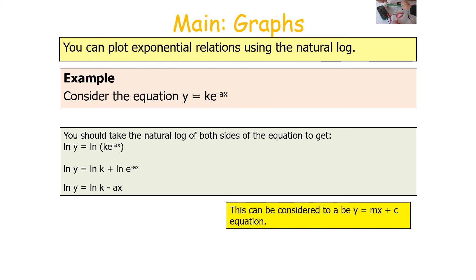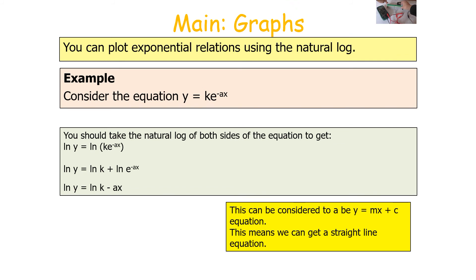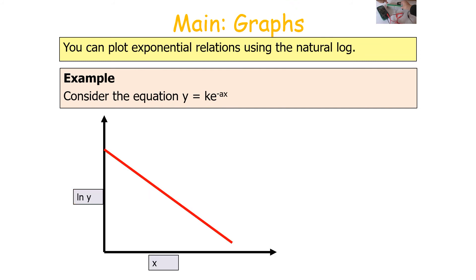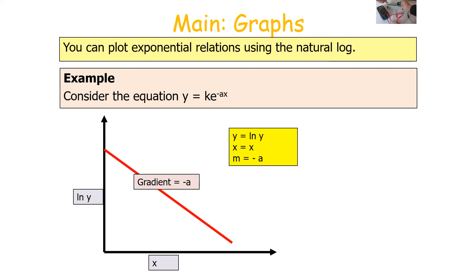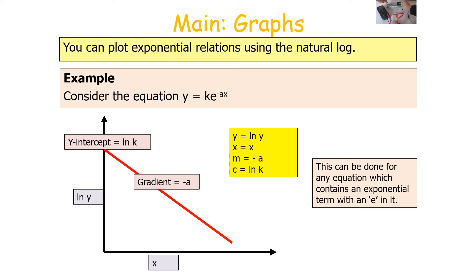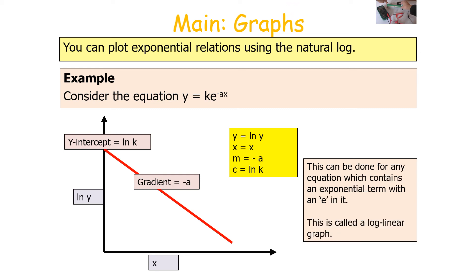With LN Y on the Y-axis and X on the X-axis, the gradient equals −A (the power term multiplied by X in the original equation), and the Y-intercept C equals LN K. We call this a log-linear graph because the Y-axis is a logarithmic term (LN Y) while the X-axis is a linear term (X). This approach works for any equation containing an exponential term with E.